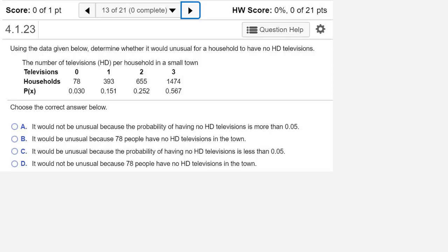So the first row of our table is the number of televisions in the house. The second row represents how many households have that number of HD televisions. And the third row represents the probability of finding a household with that many HD televisions.